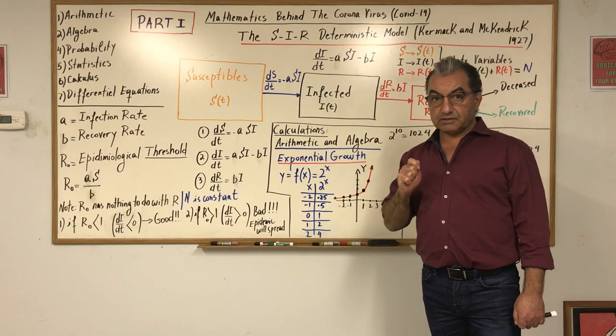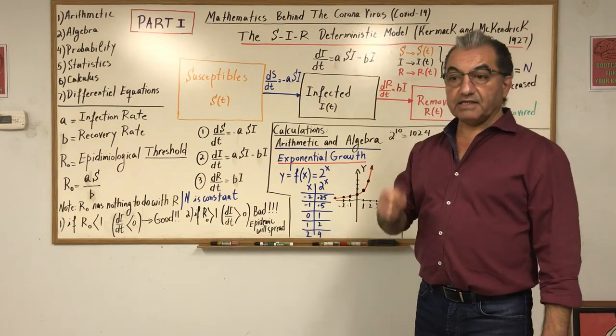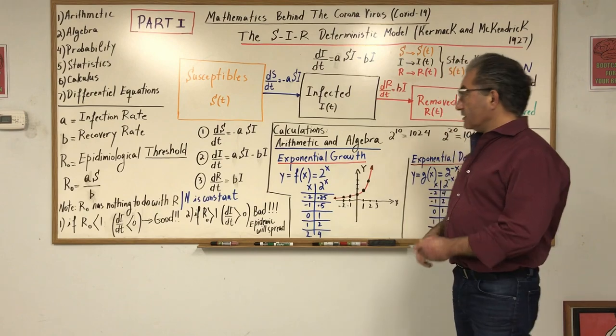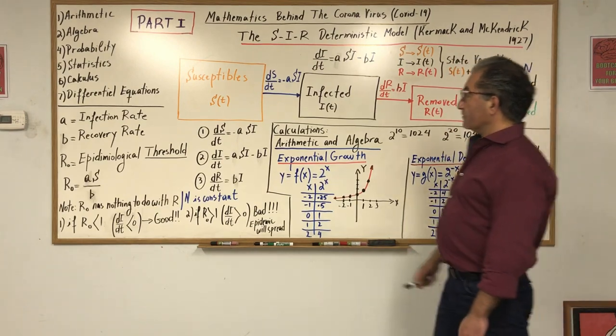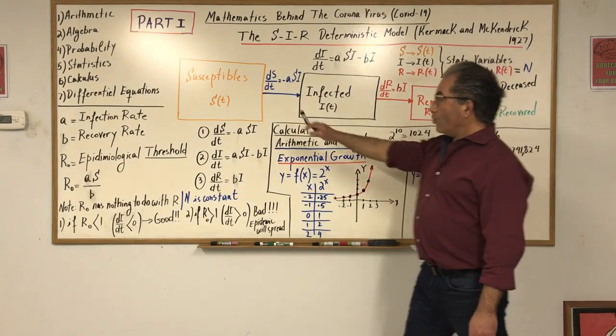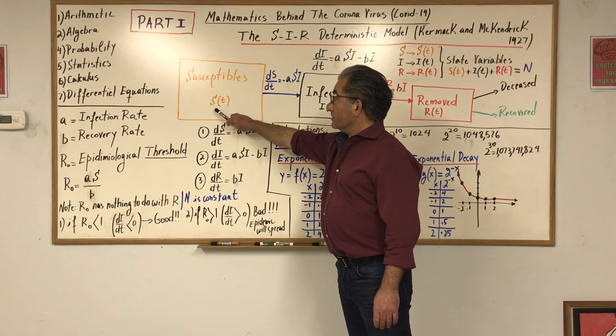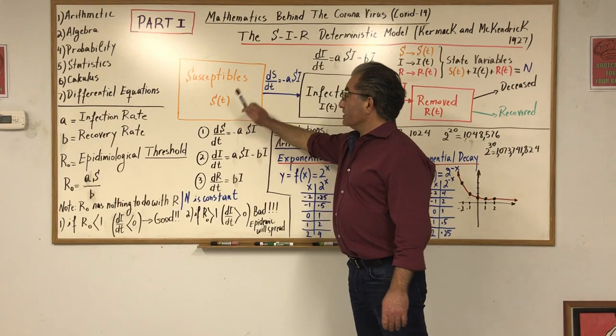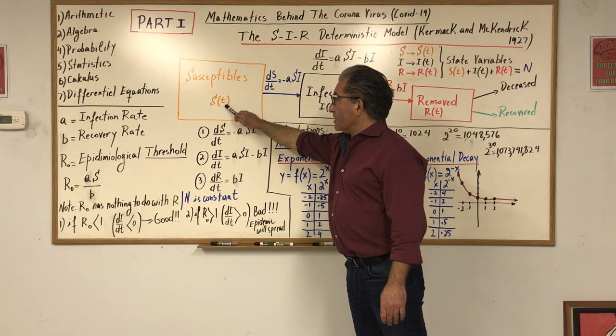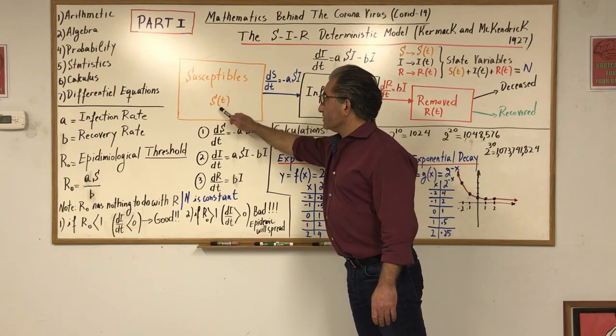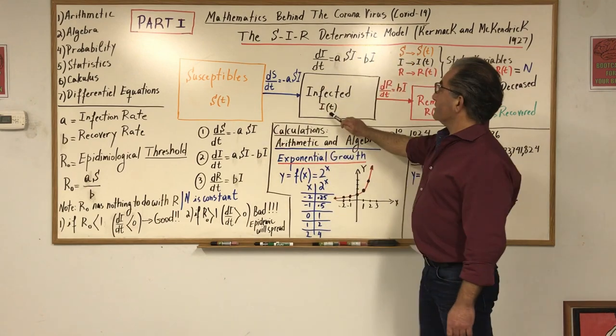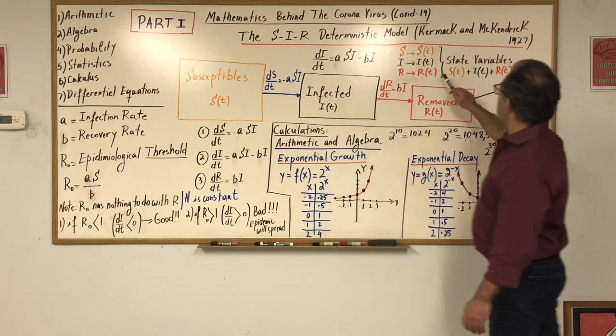The first thing I want you to know: what goes on in the world, or in a city, or in a country - we have three types of populations. One population are the susceptibles. If I put S(t), this is because it changes with time; t is time.